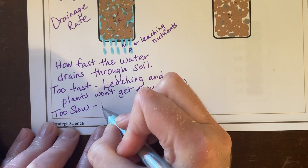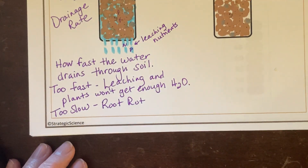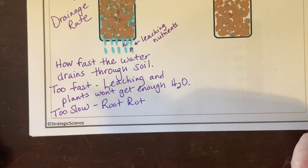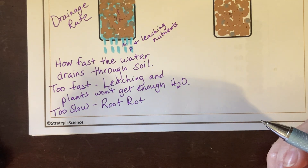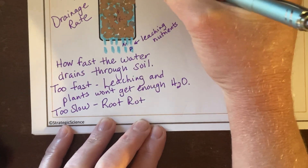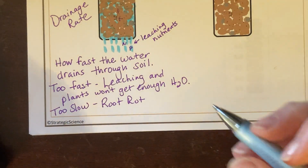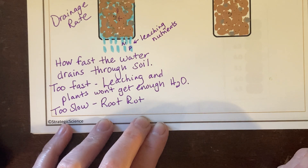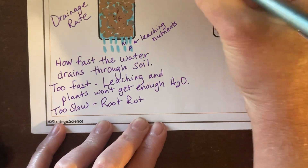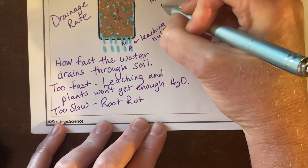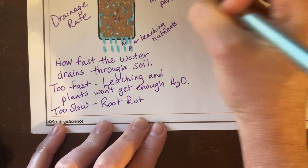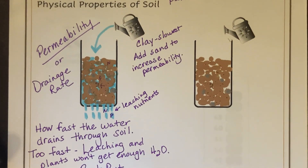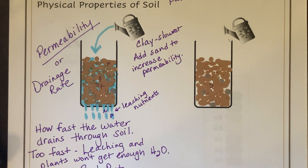If drainage is too slow, water will rot the roots — we call it root rot. If your roots sit in that water, decomposers can move in and start to decompose the roots of the living plant. Clay is the slowest for permeability. If you have a slowly draining sample of soil, you can add sand to increase permeability. Around Santa Clarita most people's planters have a lot of clay soil, so gardeners add a little bit of sand into their soil to help the drainage rate.